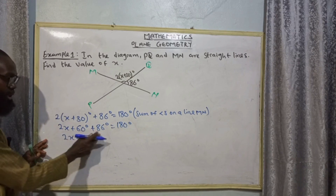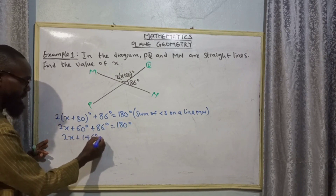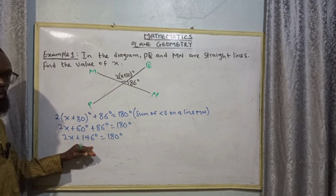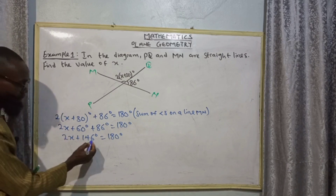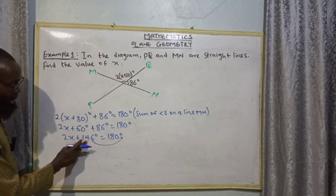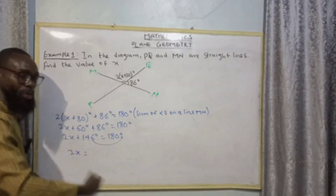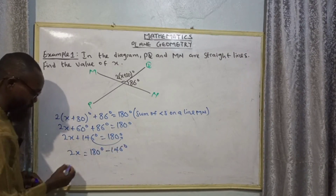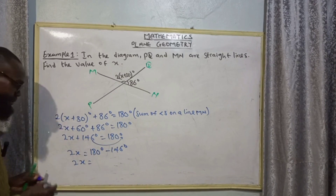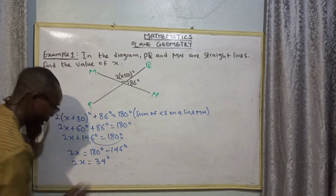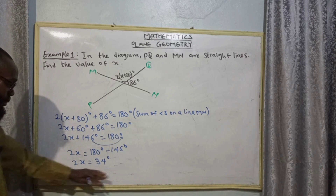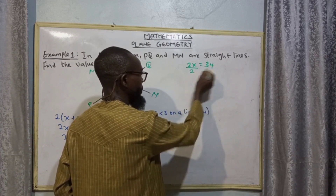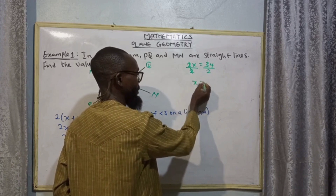So, 2x plus 30, when we sum it up we get 2x + 30 + 66 = 180. Collecting like terms, 2x equals 180 minus 146 degrees. So 2x is equal to 34 degrees. Now to find the value of X, I have to divide both sides by 2. So X is equal to 17 degrees.